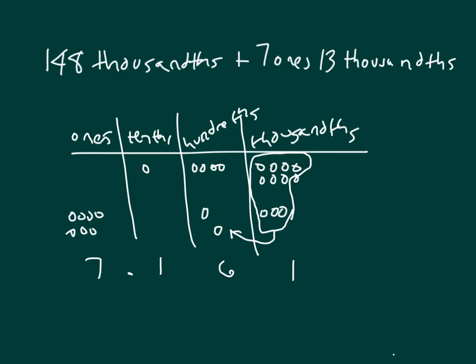Let's solve this numerically to see whether or not I get the same answer. 148 thousandths. And there's seven ones, 13 thousandths. 8 and 3 is 11. 1, regroup the 1. 1 plus 4 plus 1 is 6. 1 in the tenths place. And in the ones place, there's a 7. So I do get the same number numerically that I got using the place value chart.